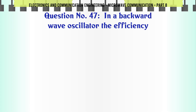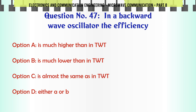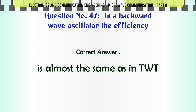In a backward wave oscillator, the efficiency — A. Is much higher than in TWT, B. Is much lower than in TWT, C. Is almost the same as in TWT, D. Either A or B. The correct answer is: almost the same as in TWT.